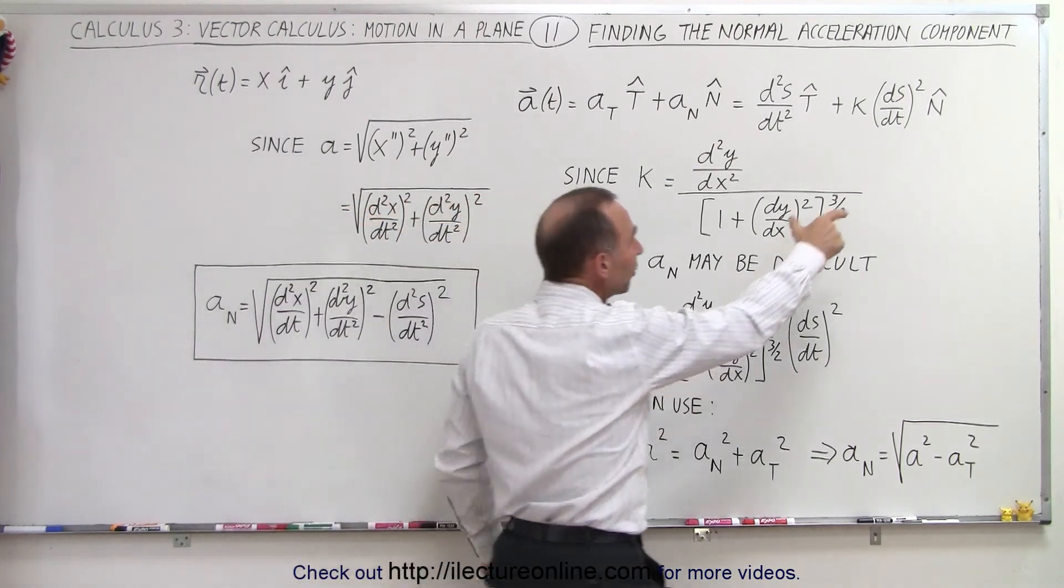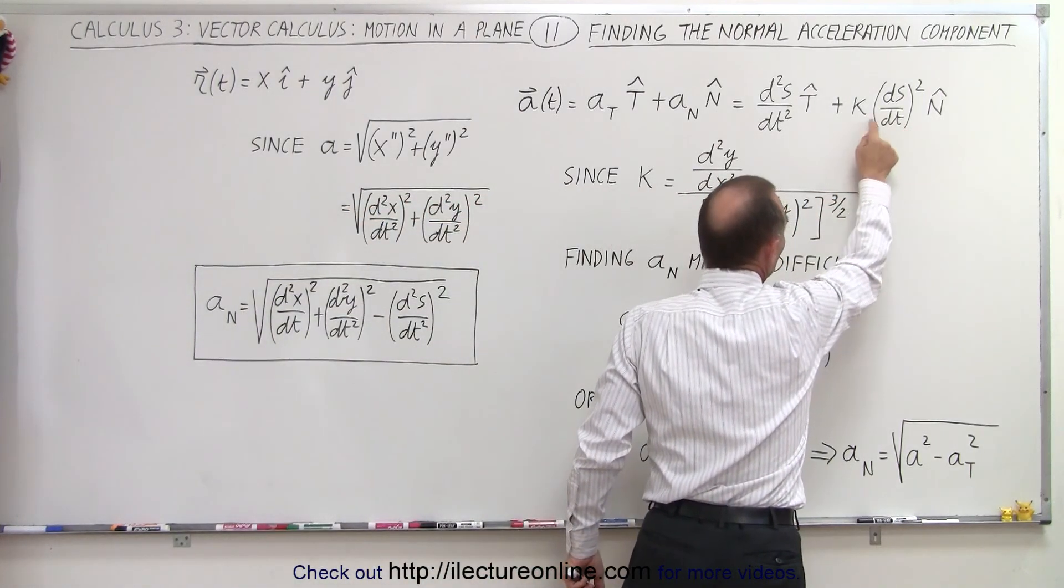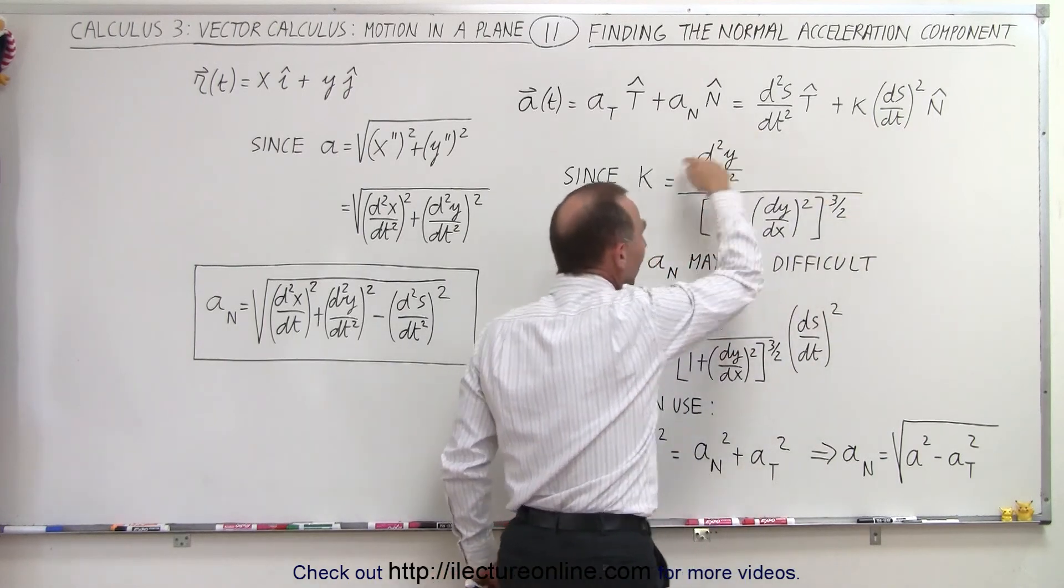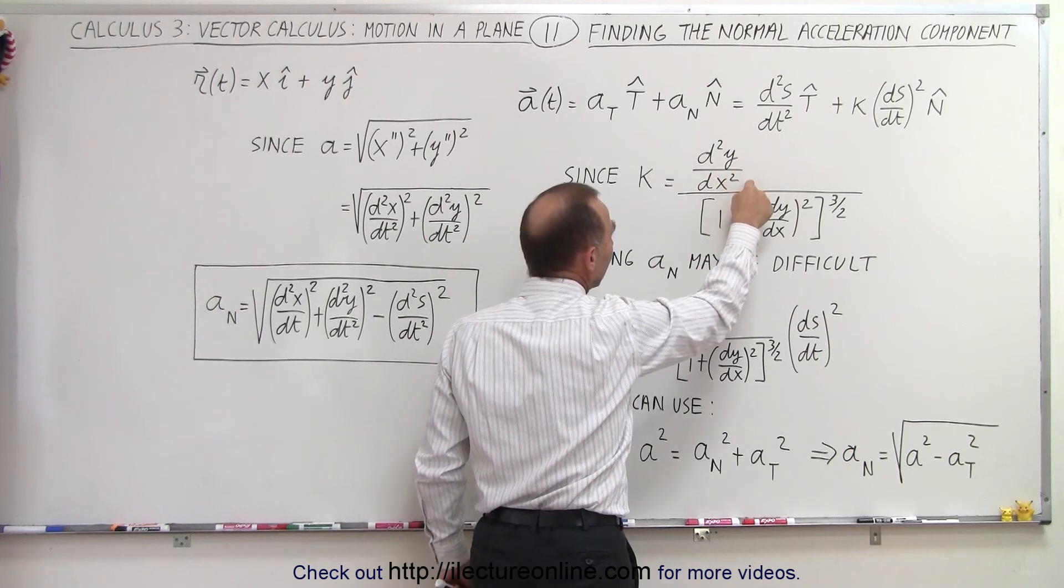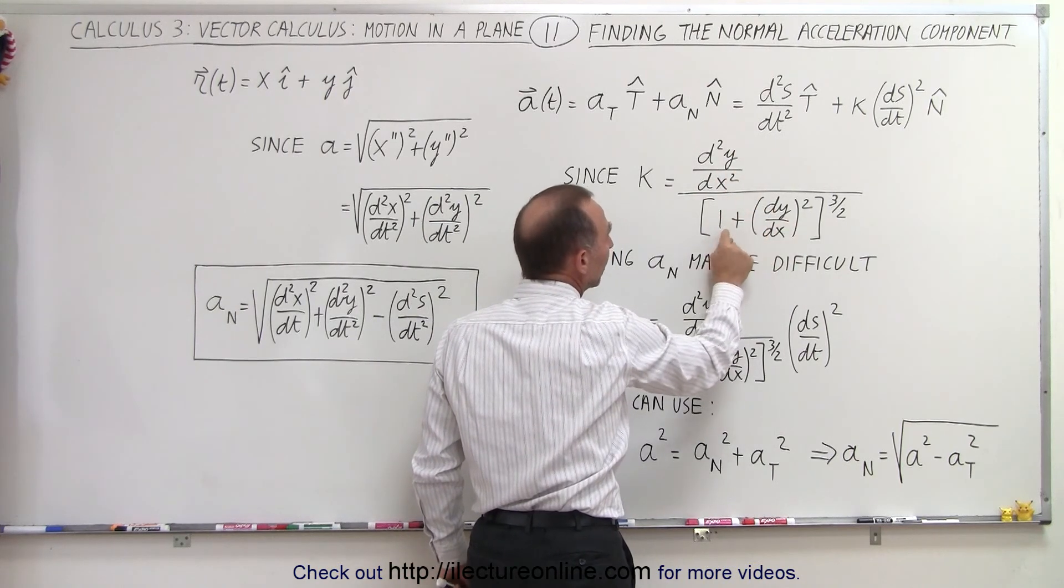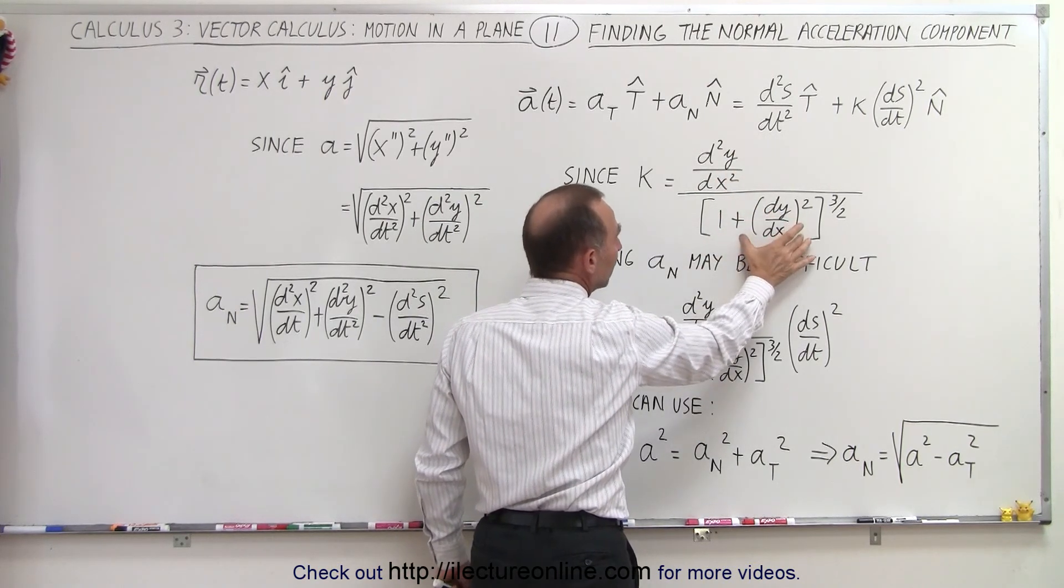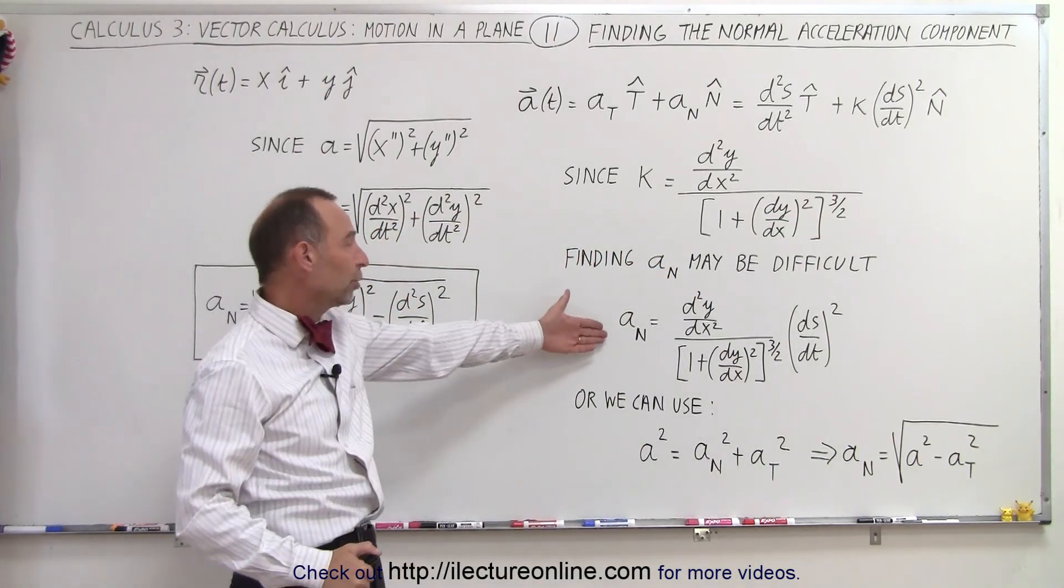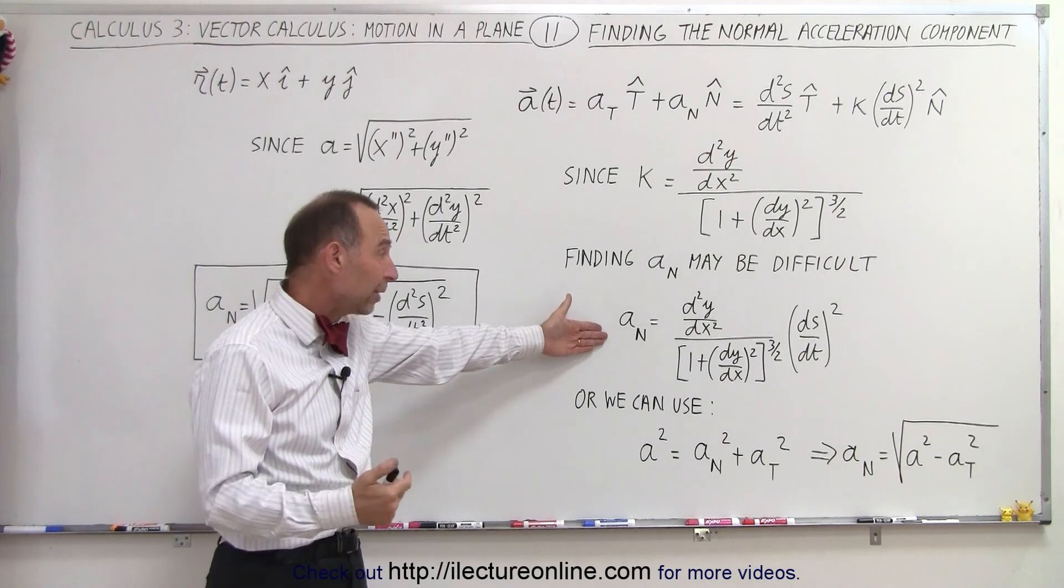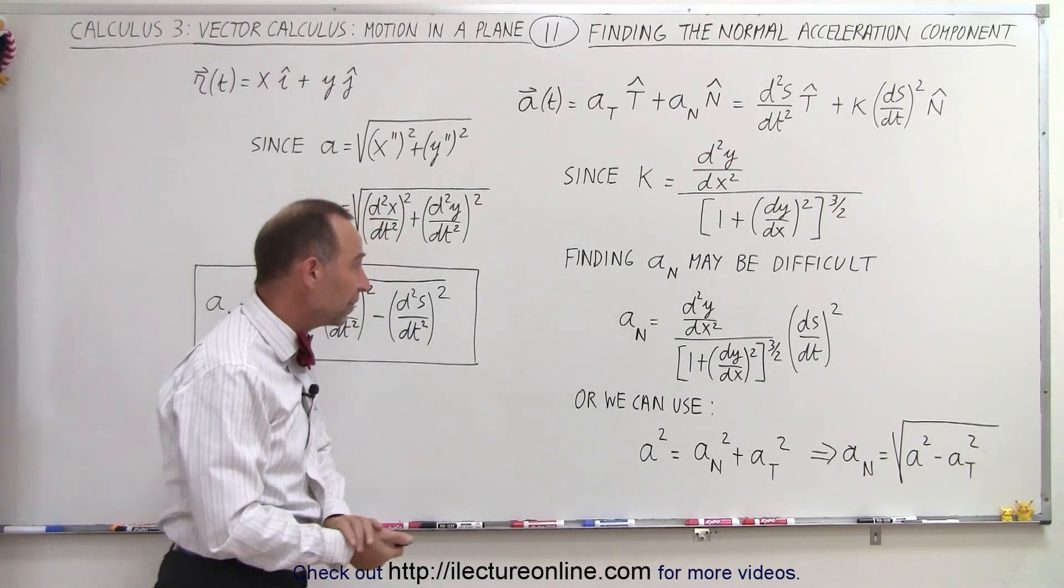But finding the normal component can be a little bit more difficult since the curvature is defined by this expression which is quite complicated. The curvature is the second derivative of y with respect to x divided by the quantity 1 plus dy/dx quantity squared to the 3 halves power. So it can be rather difficult.